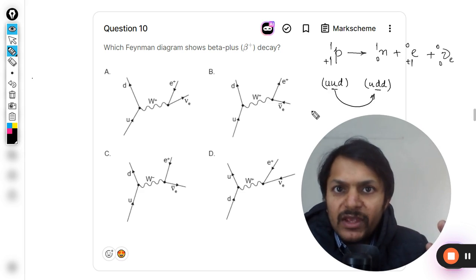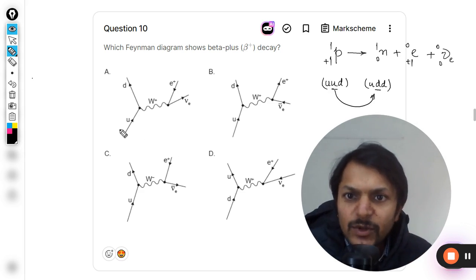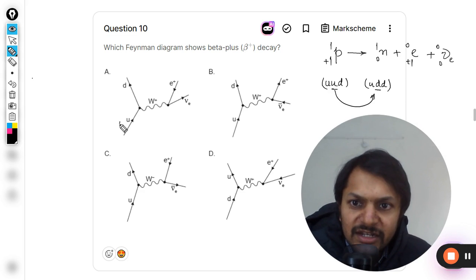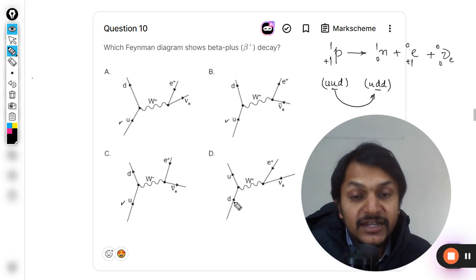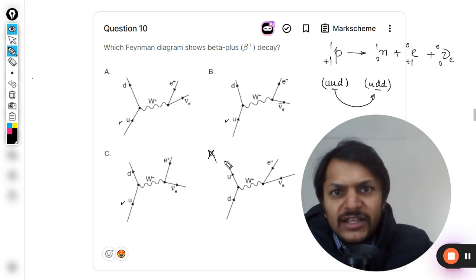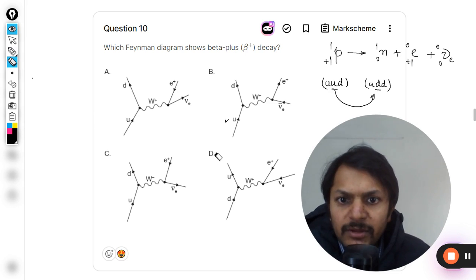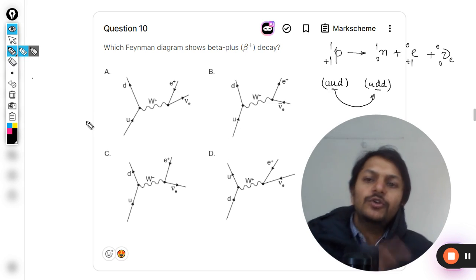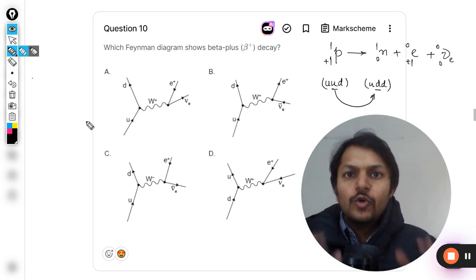This is what is shown here. They are all starting with the up quark, but option D is starting with the down quark, so D is definitely out of the picture now. Coming back to the options again, how are you going to read a Feynman diagram?